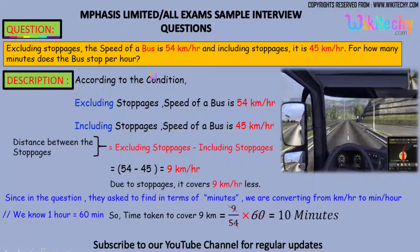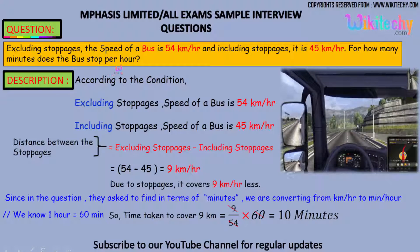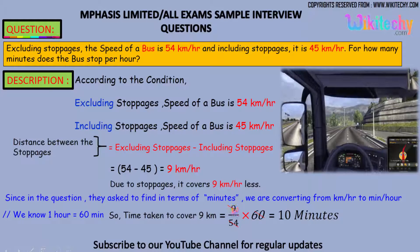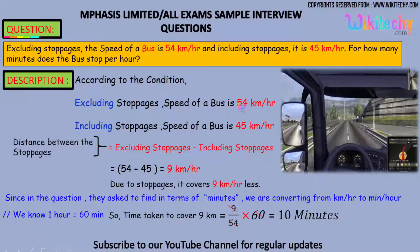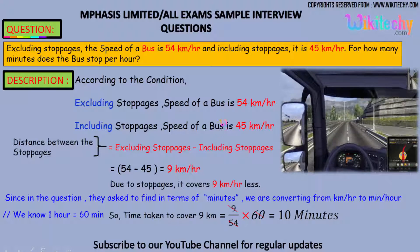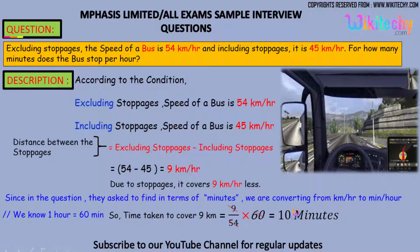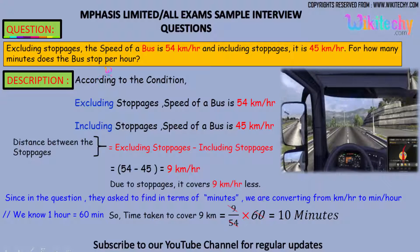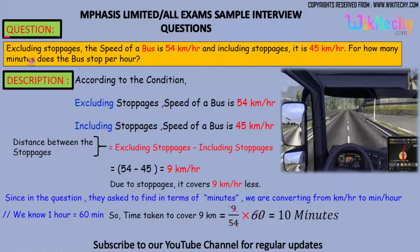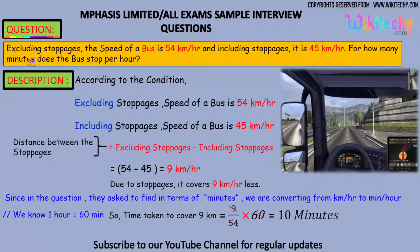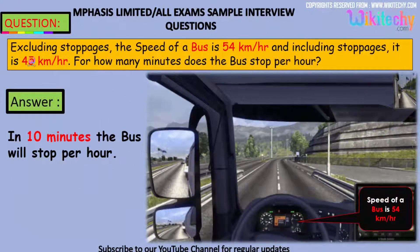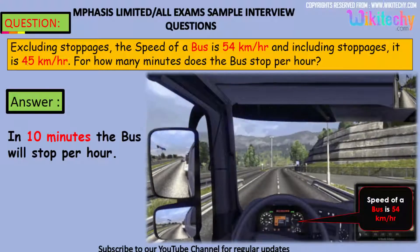To convert into minutes — for how many minutes does the bus stop per hour — it is 9 km per hour. So, 9 divided by 54, the total speed excluding the stoppages, into 60. You get the answer: 10. So the bus stops for 10 minutes per hour. That is the answer.